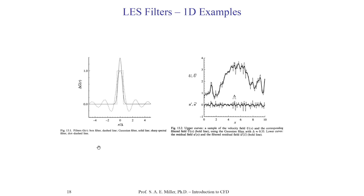Looking at examples of filters: the dashed line shows the box filter — a box around R/delta where delta is a normalized spacing. The Gaussian filter is the solid line, a Gaussian envelope that rises and falls. The sharp spectral filter has oscillations about zero and roughly follows a Gaussian curve. Each of these integrates to 1 from negative infinity to infinity. There are advantages and disadvantages for different filter types.